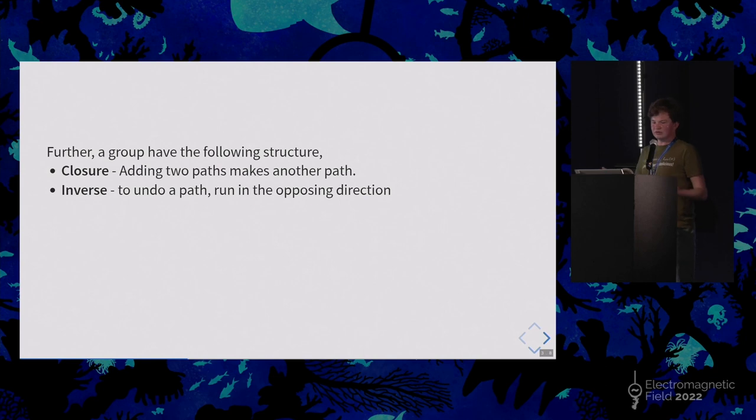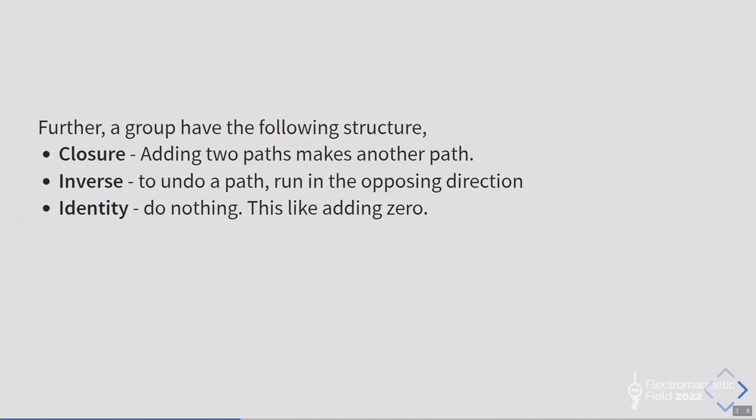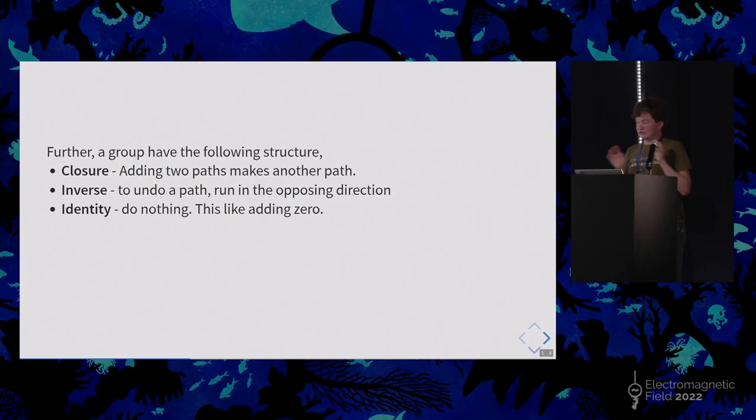So a group to a mathematician has the following structure. Closure. So as we've seen, if we take any two paths, add them together, we get another path. Now that's pretty simple, right? So inverse. So we need to undo a path. And obviously, if I'm going to run all the way back out there and all the way back, what I'm going to do if I want to do the inverse of that is I run all the way in the opposite direction. So the inverse is running in the opposite direction. Great. So if I'm going to do an identity, identity mathematics means that if you add it to something else, you get the same thing you started with. So adding zero, think, or multiplying by one, something like that. So the identity loop or the identity run is doing nothing. It's like adding zero.